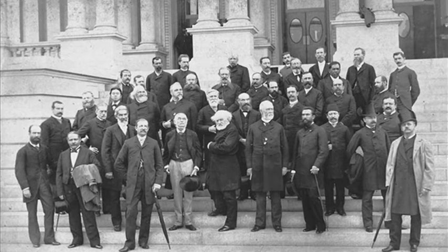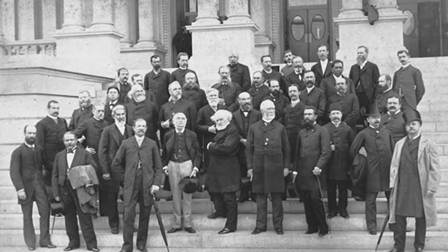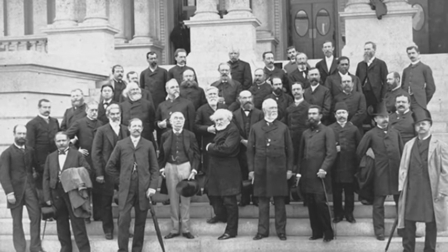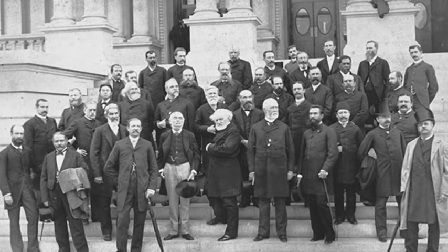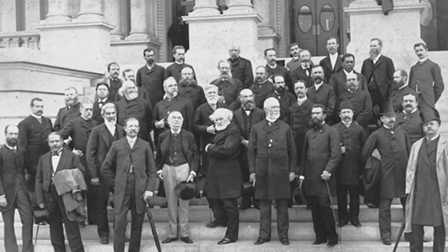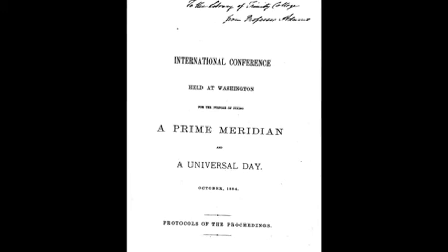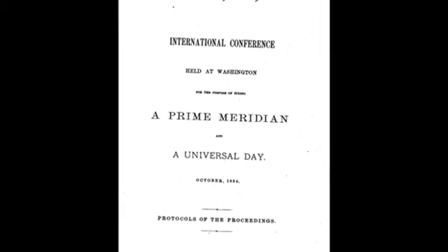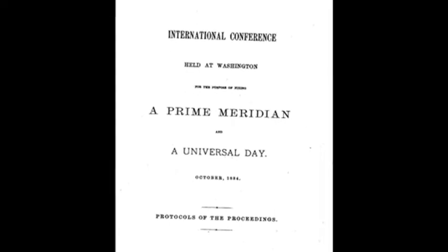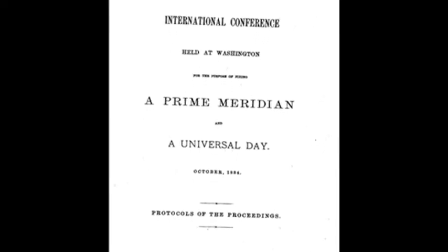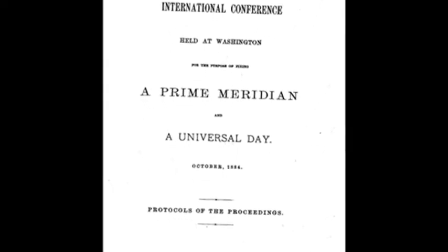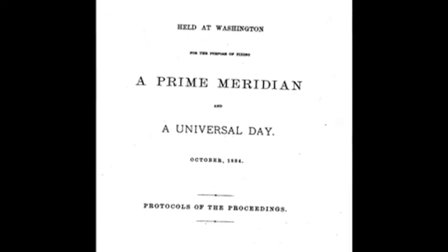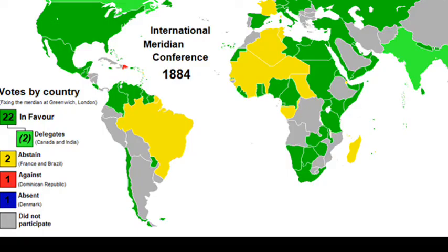Forty-one delegates from 26 nations travelled to Washington DC, where the International Meridian Conference began on 1 October 1884. Three weeks later, on 22 October, they adopted a series of resolutions that resulted in the Greenwich Meridian becoming the international standard for zero degrees longitude, ensuring continuity with most existing nautical charts.